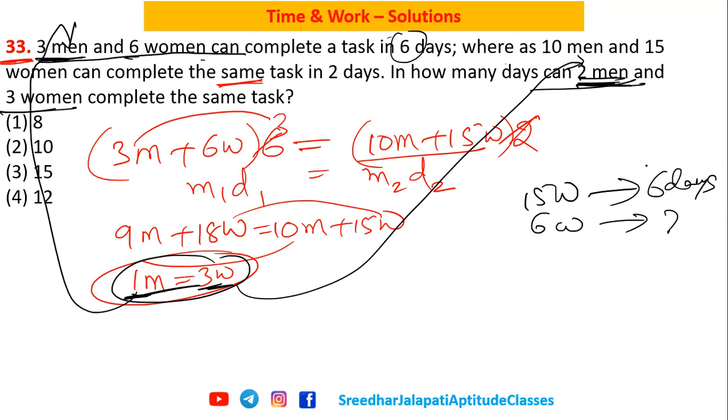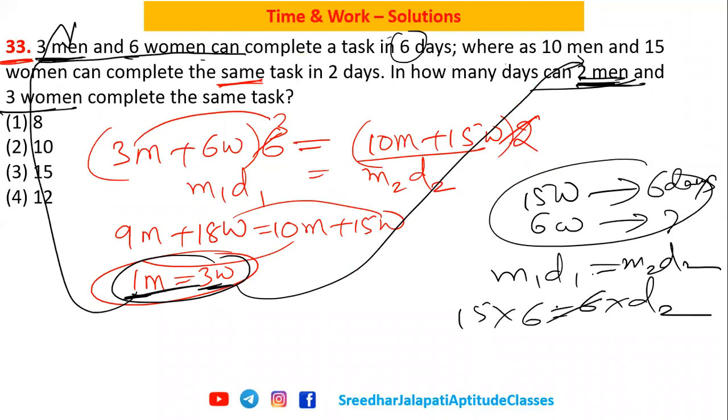In that also I'm substituting, one man equals three women, then two men become six women, six plus three is nine women can do it in how many days. Now again, since everything is women, I can apply m1*d1 equals m2*d2. That is 15 women, 6 days, six women how many days. Six and six get cancelled, we'll get it as 15 days. Wait, I think something went wrong. Two men and three women, five times...